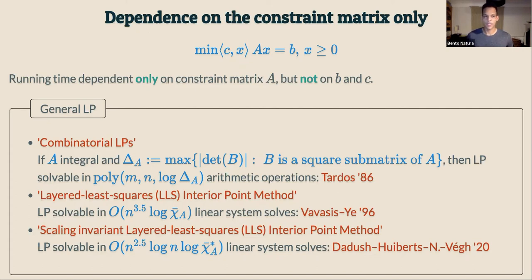Other algorithms that only depend on the constraint matrix are the Layers-Lee-squared interior point method by Vavasis and Ye, which solves polynomially many linear systems in time polynomial up to the logarithm of a condition number chi-bar. Our result from this year is a scaling-invariant Layers-Lee-squared method, which reduces the runtime of the Vavasis-Ye algorithm by a factor of n and replaces the condition number by the best condition number achievable by rescaling the columns of the constraint matrix.